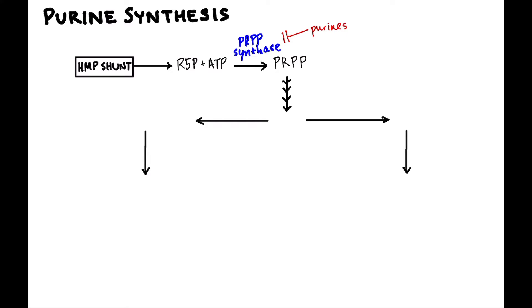PRPP undergoes a variety of transformations through multiple enzymes and ultimately becomes IMP, or inosine monophosphate — the grandfather of all purines. Inosine is not used in DNA, but it is a precursor for nucleotides that are used in DNA. This collection of steps is important because this process is mediated by folate. You need folate to go through this process, which is why folate deficiency can lead to megaloblastic anemia — if you can't make DNA. We use drugs that inhibit folate synthesis to reduce DNA synthesis and thus reduce cellular proliferation.